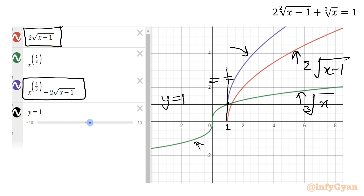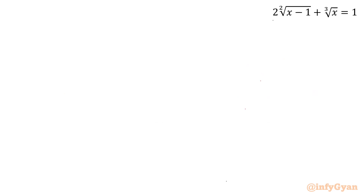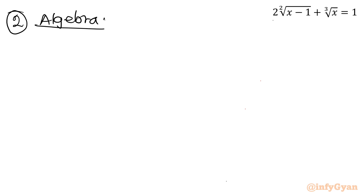That is why this graph is very important — this behavior is happening at the lower bound, at x = 1. Now let us consider the algebraic method, which is our second method.